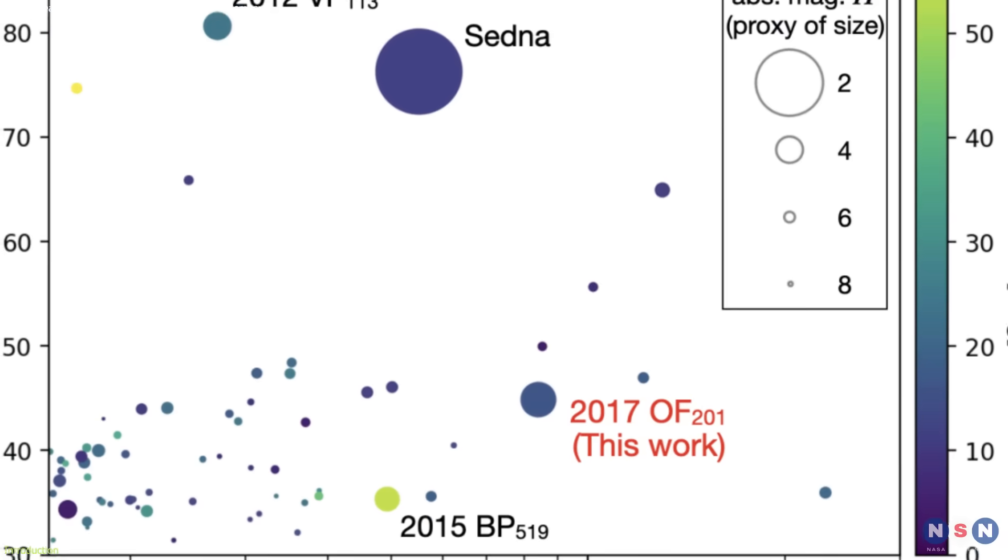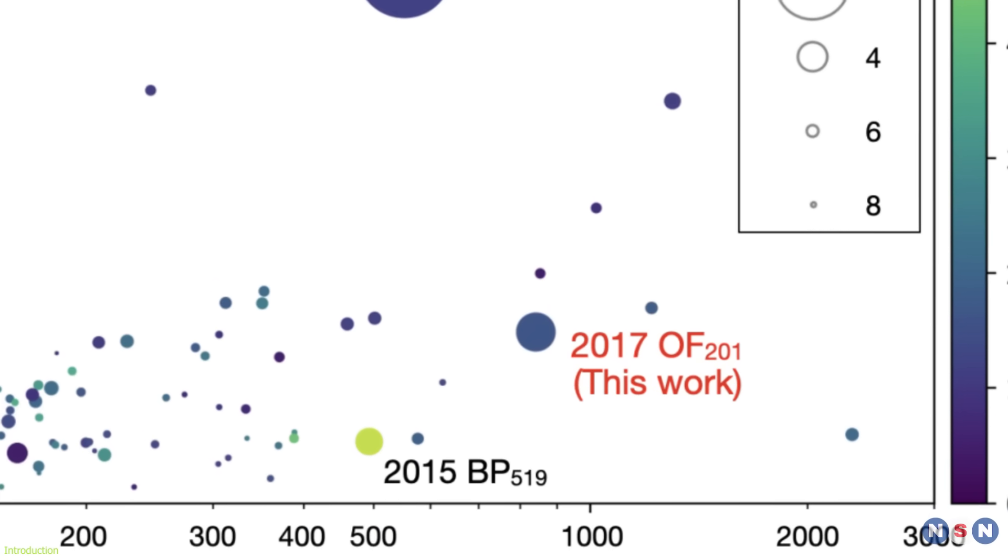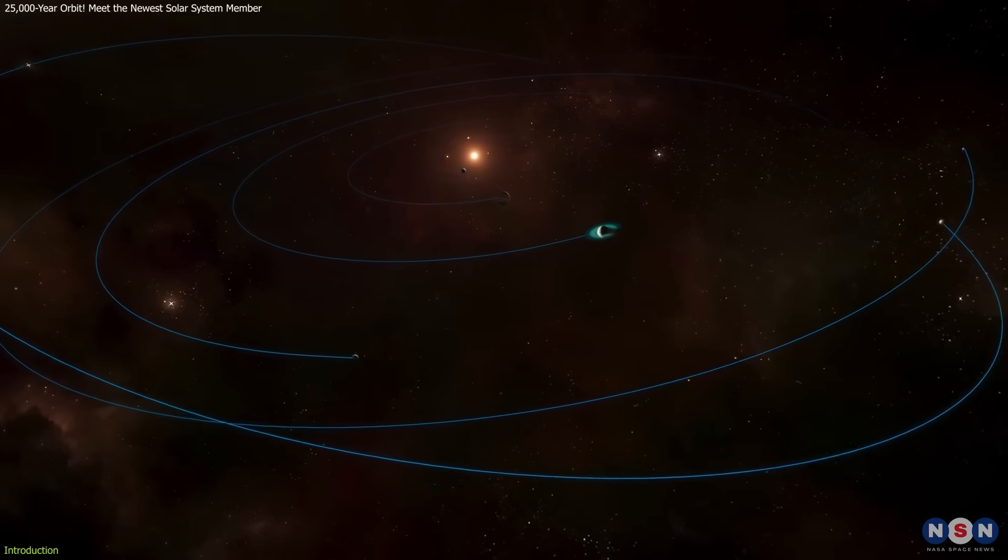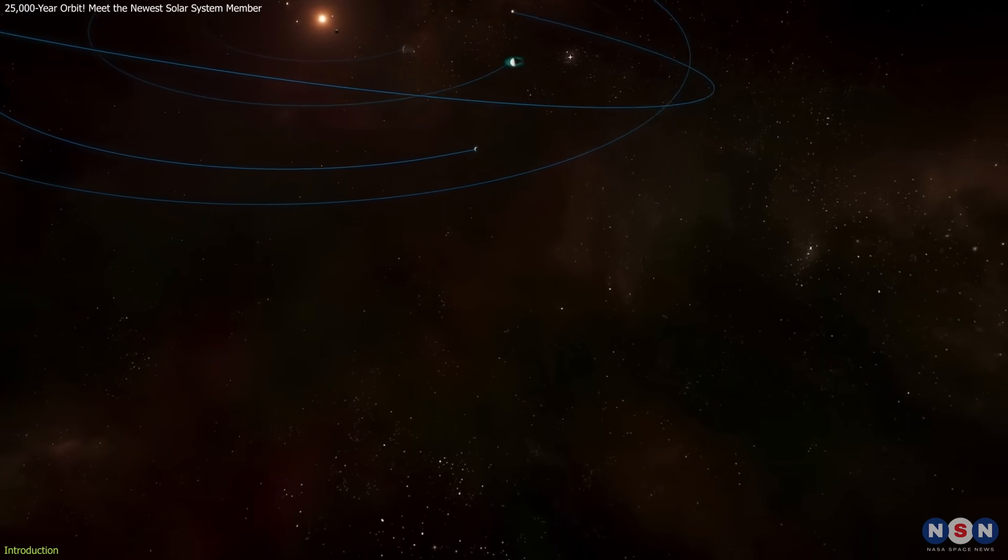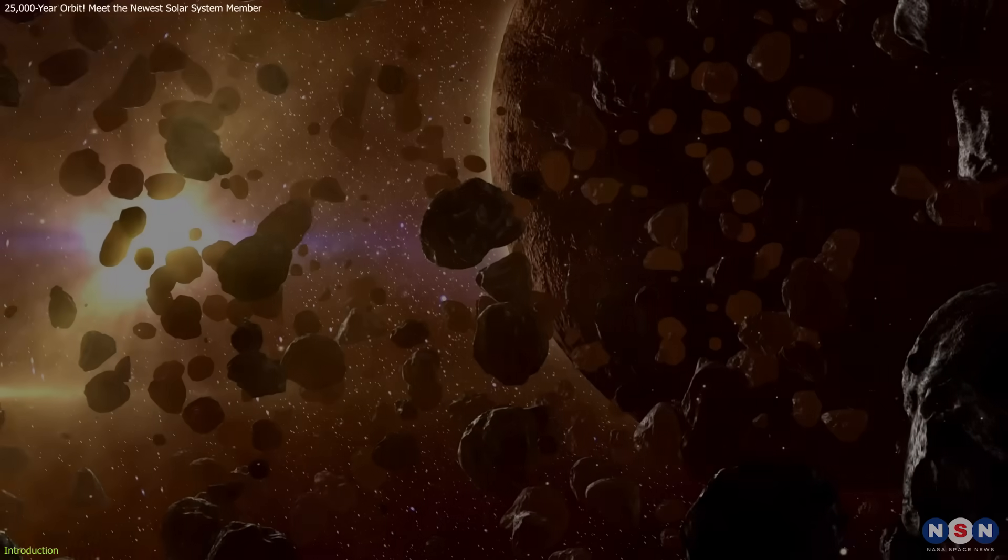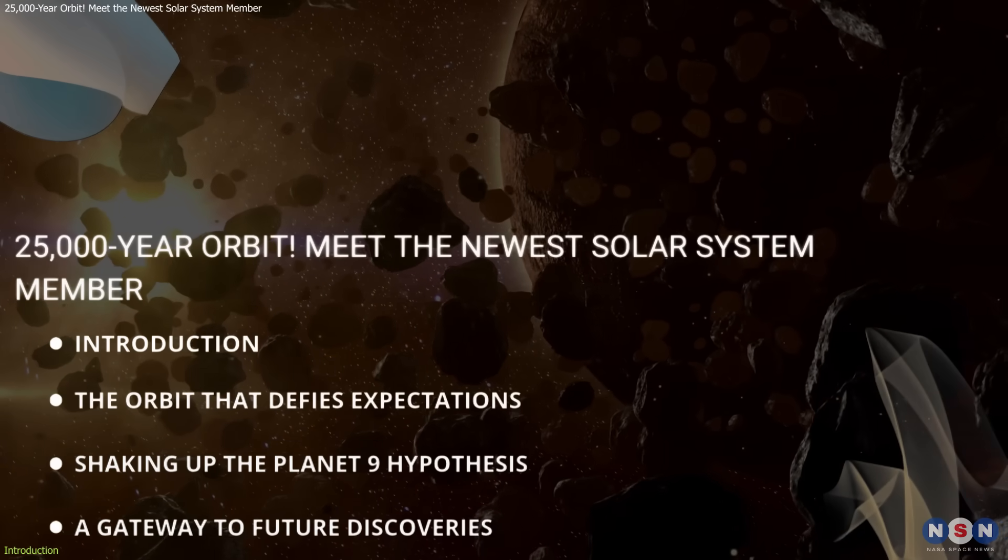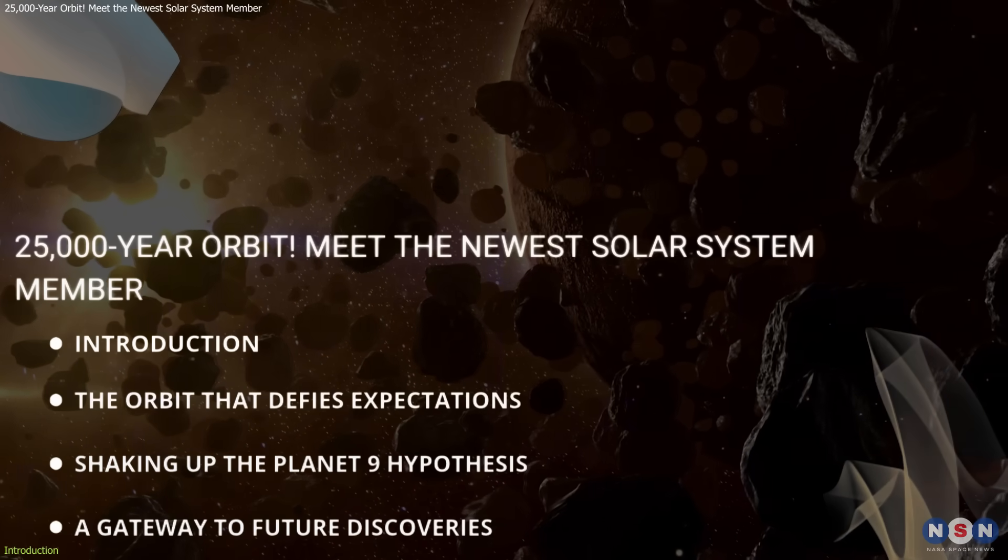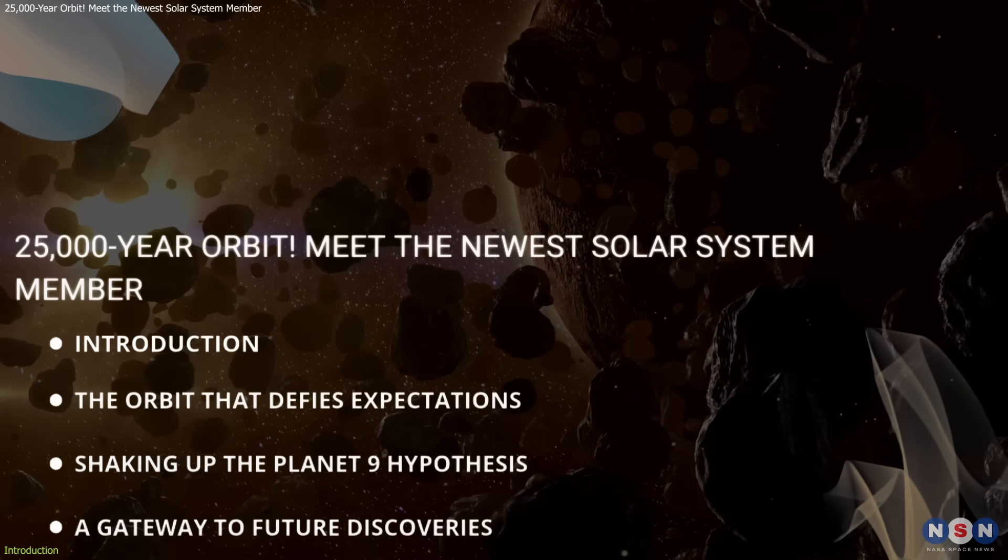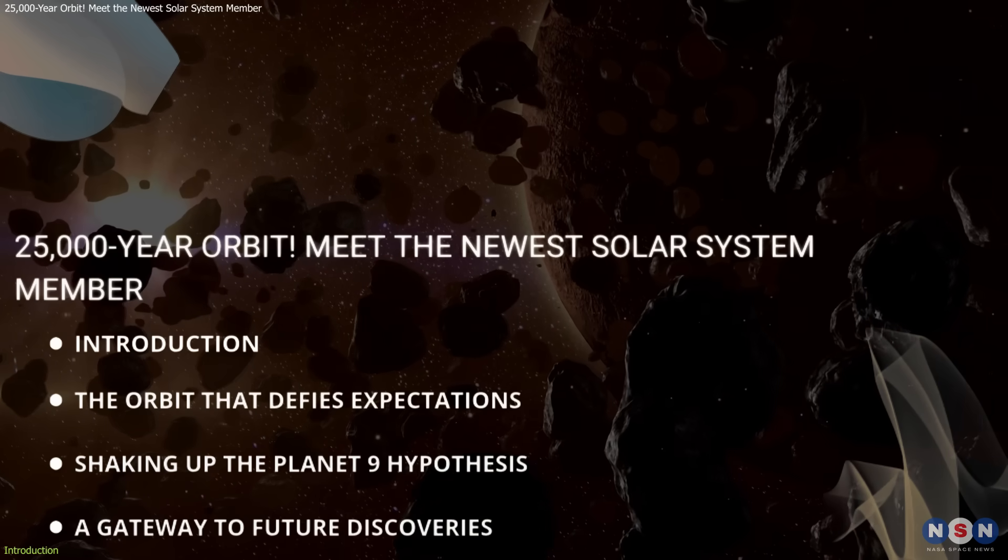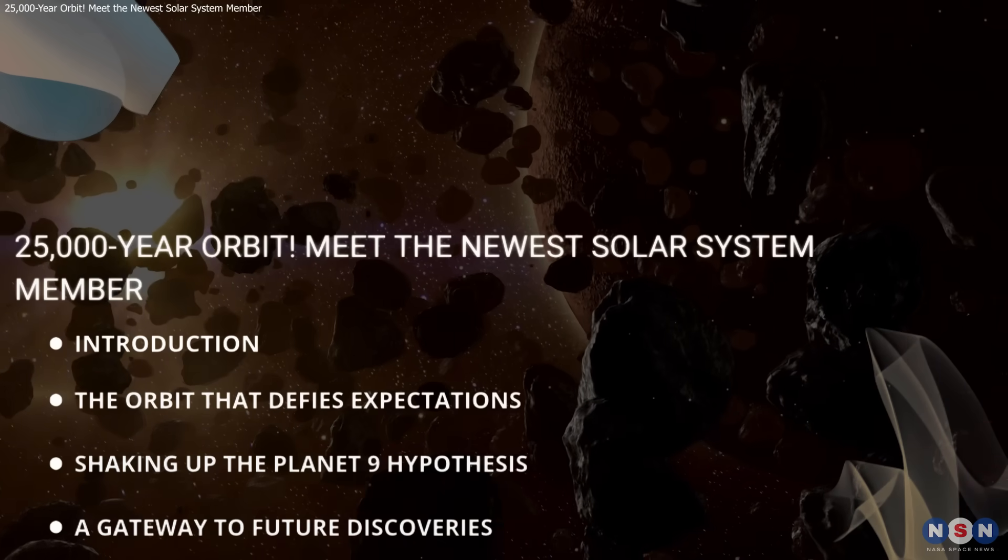But what makes it truly remarkable is not just its size or distance, but the way it reshapes our understanding of the outer solar system and the mysteries that still lie beyond Neptune. In this video, we'll explore what makes 2017 OF-201 so unique, how it challenges the Planet 9 hypothesis, and what this discovery could mean for the future of solar system exploration.